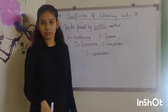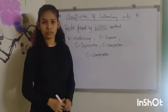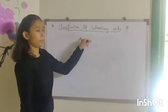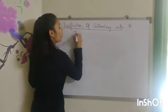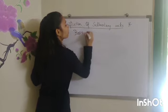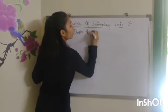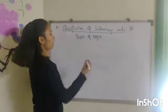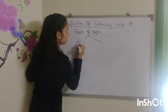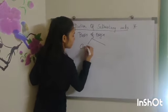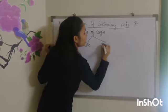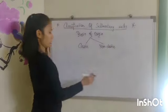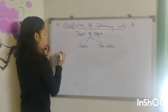Now this was all about sedimentary rocks. Let us move on to classification of sedimentary rocks. On the basis of origin, sedimentary rocks are divided into two types: first is the clastic sedimentary rock and second is the non-clastic sedimentary rocks.